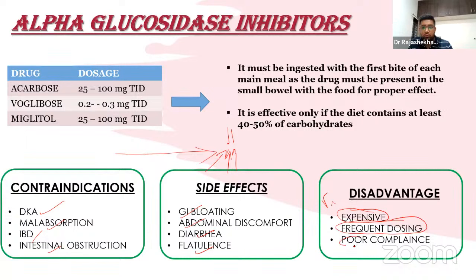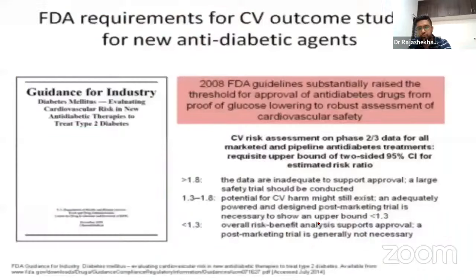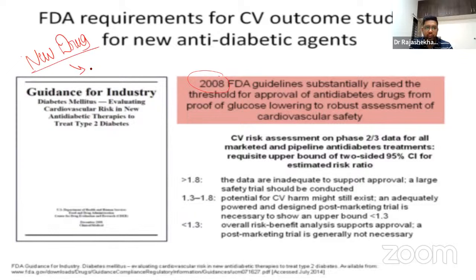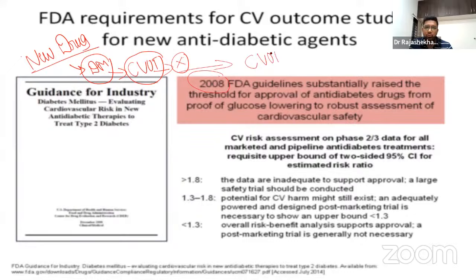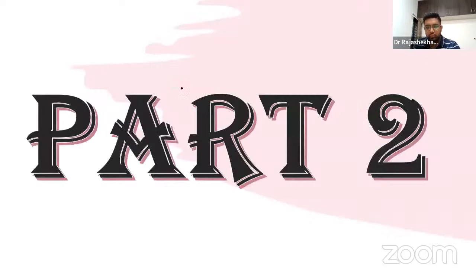To conclude part one: since 2008, the FDA requires any new antidiabetic drug to pass cardiovascular outcome studies before approval. This means the drug must demonstrate that it does not adversely affect cardiovascular health on long-term use. All new OADs getting approved today must clear these CV outcome studies.